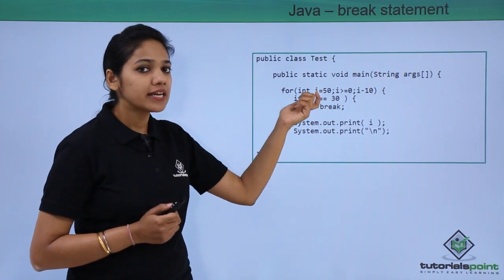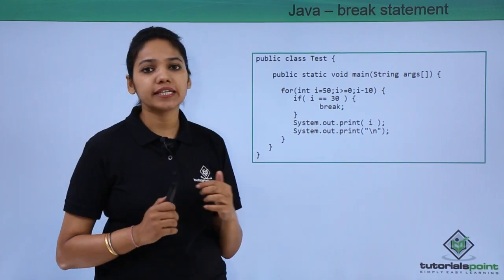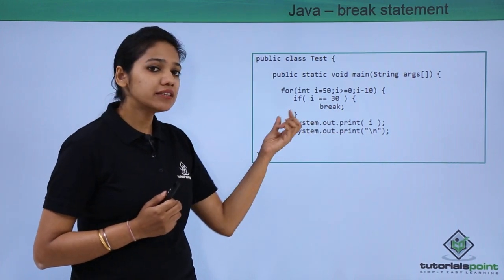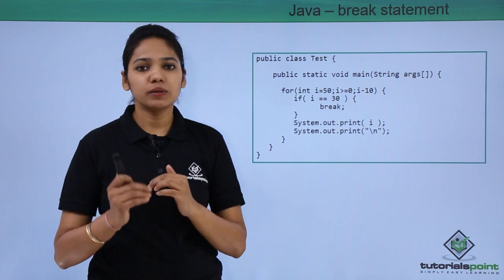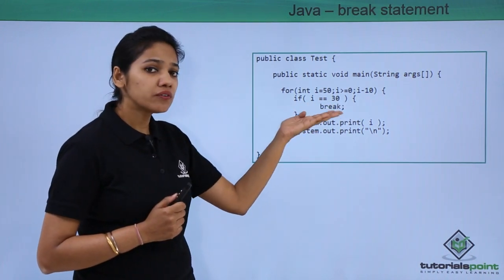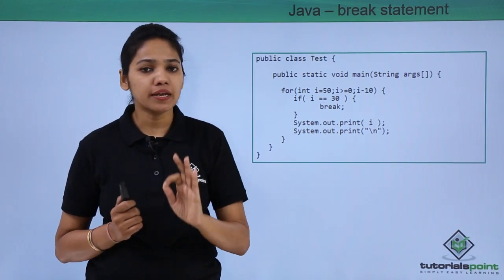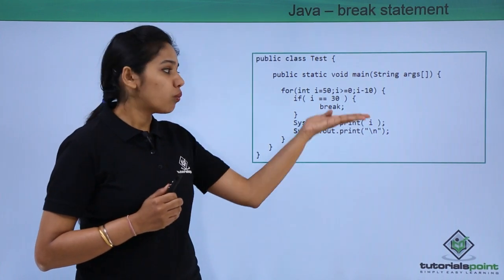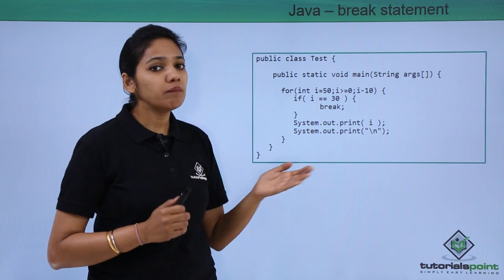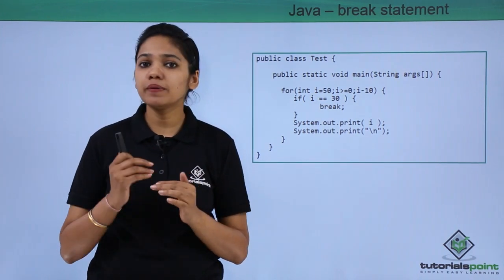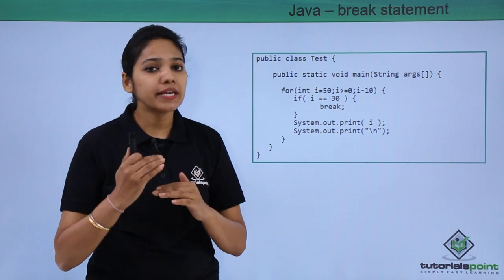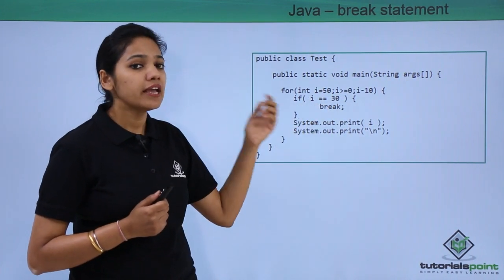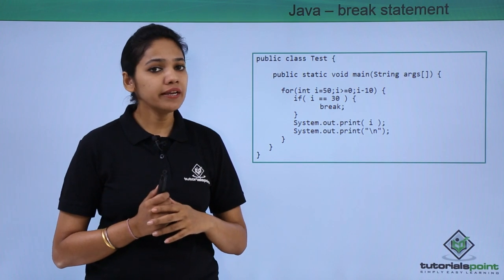It will come and check the condition — is 30 equal to 30? Yes, 30 is equal to 30. Therefore, the block of statements inside the curly braces of this condition will be executed, and that block contains a single keyword called break. This break keyword is more than enough to terminate the program. Once it encounters the break keyword, the loop will get terminated — no more iteration or increment/decrement. Therefore, the values printed are only 50 and 40; from 30, none of the values will be printed.